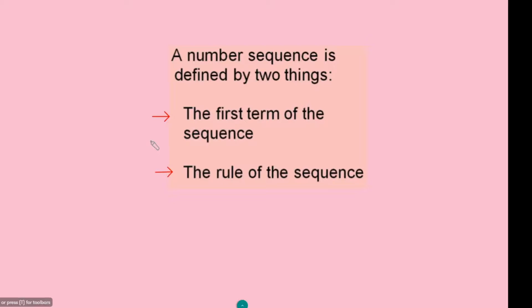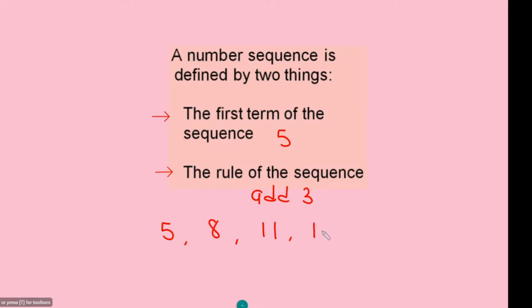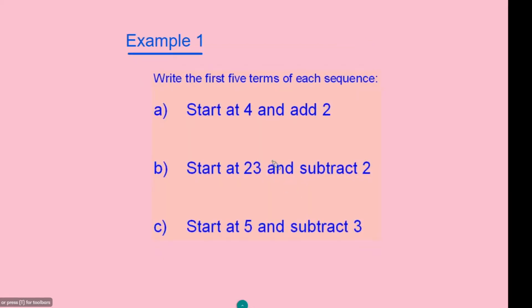A number sequence is defined by two things: firstly, the first term of the sequence, and secondly, the rule of the sequence. For the purpose of explanation, let's say the first term of a given sequence is 5 and the rule is 'add 3'. We begin with the first term 5, add 3 to get 8, add another 3 to get 11, then 14, then 17 — the list goes on and on.